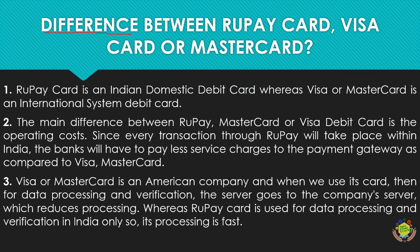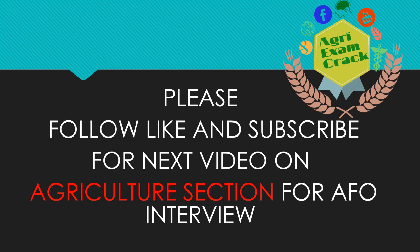RuPay card is an Indian domestic card whereas Visa and Mastercard are international card systems. The main difference is operating costs — RuPay has less commission and is a domestic card so data is secured within India. Visa and Mastercard have higher gateway charges and for international use, your data is less secured compared to RuPay.